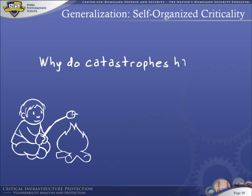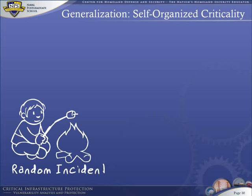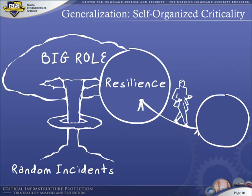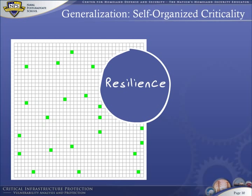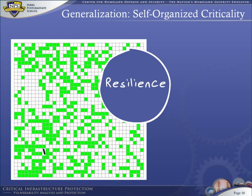So now we have an elementary theory of catastrophes and risk. Random incidents play a big role in resilience, and resilience is tied to risk. However, resilience is a property of a system, not merely a single asset within a system. The vulnerability of a tree in our simulated forest is very low, but the resiliency of the entire forest depends on percolation — many trees.